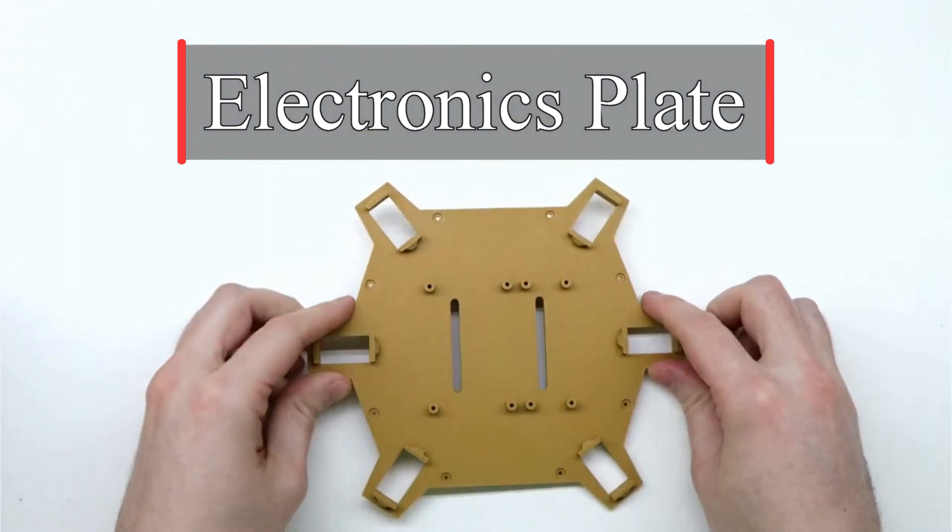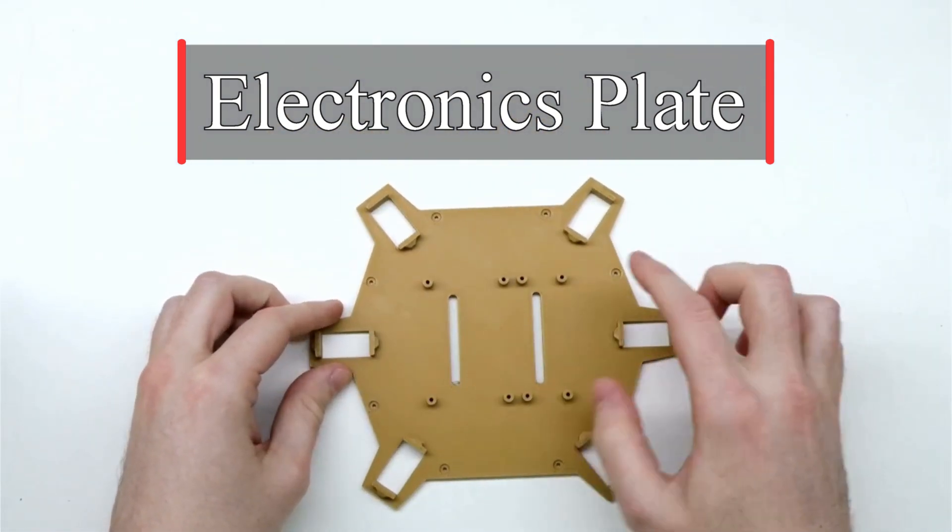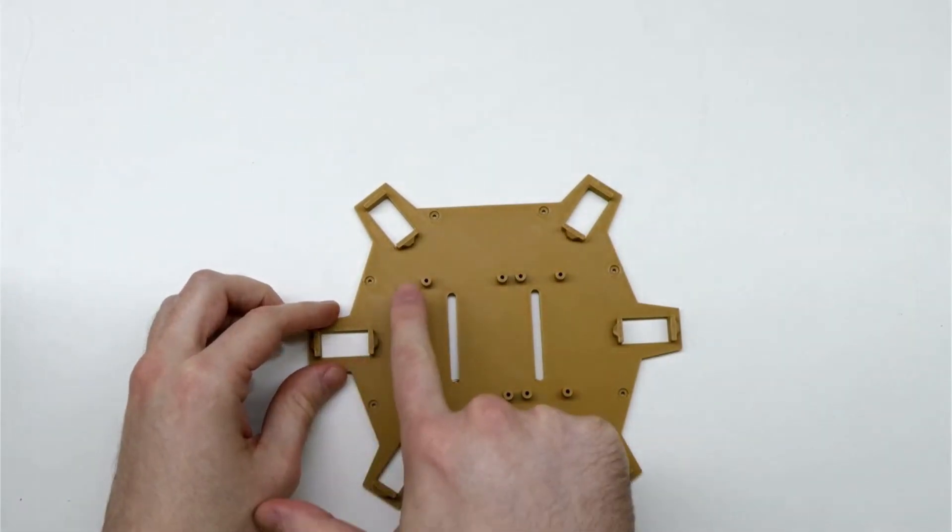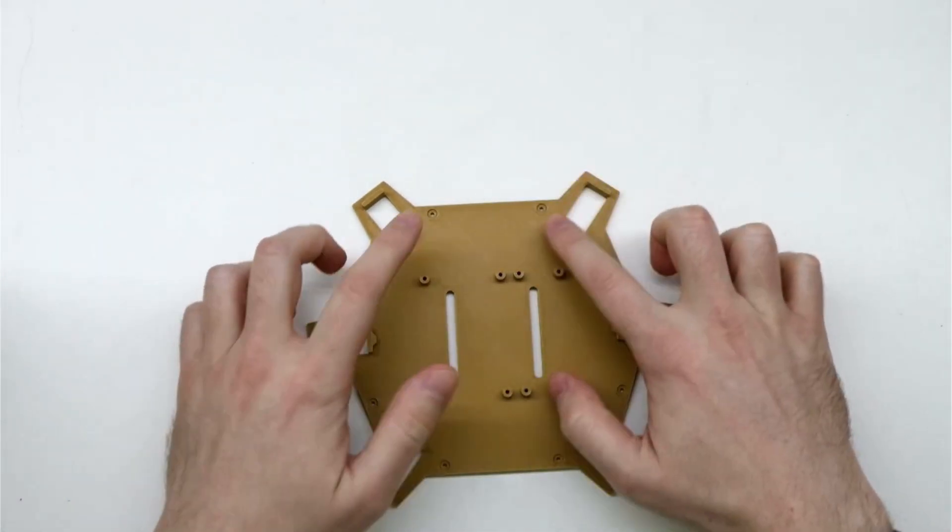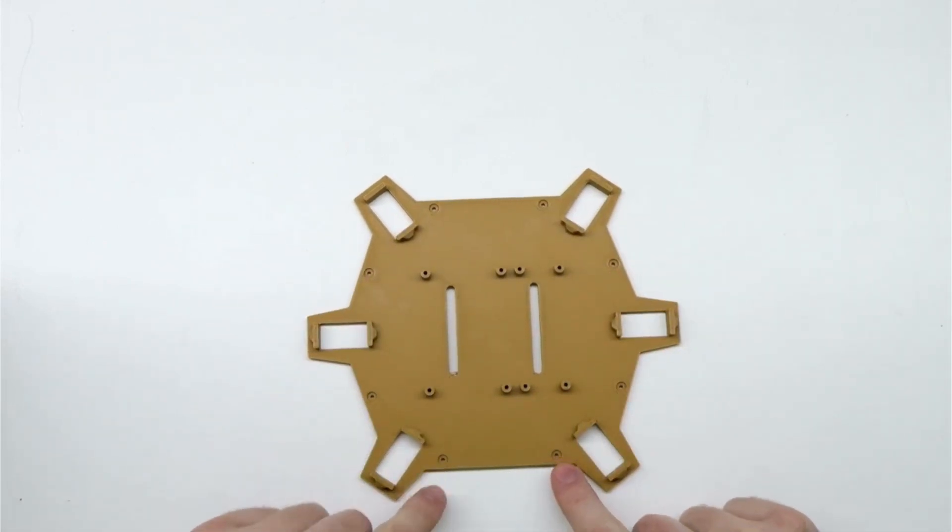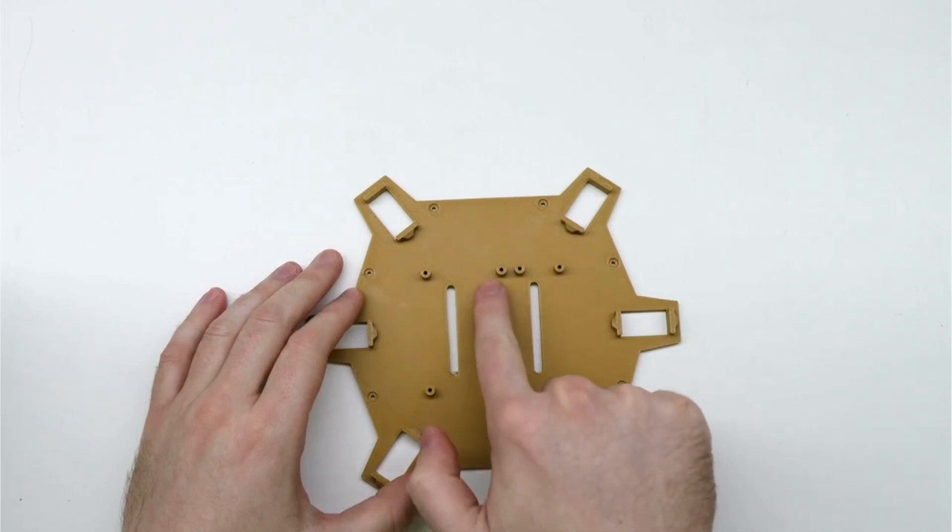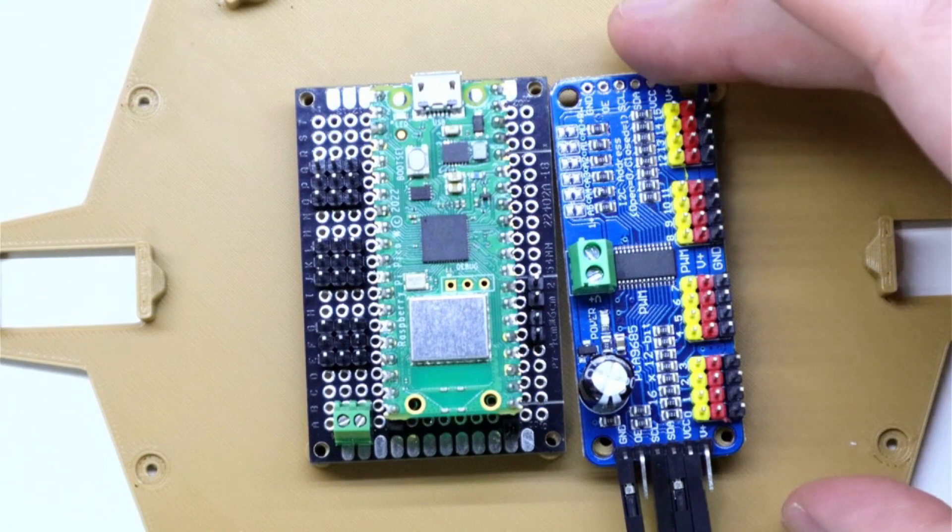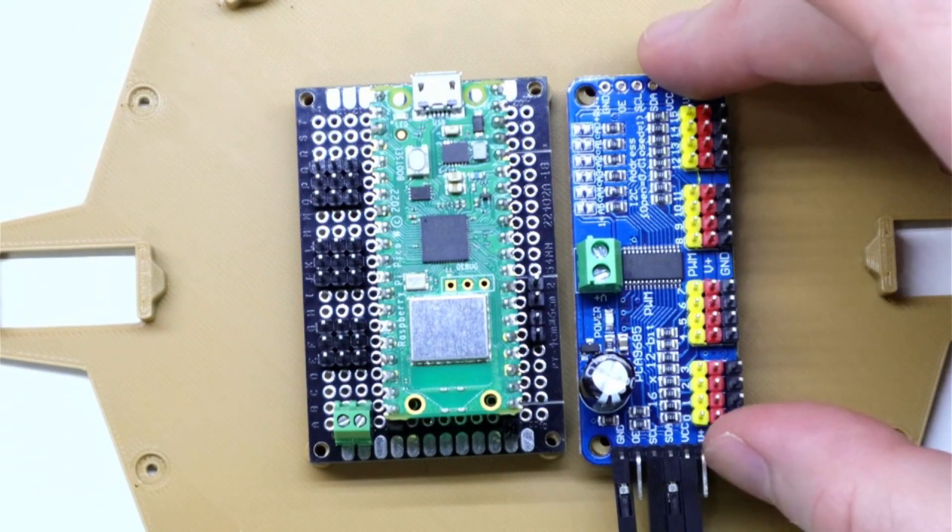This part is what I call the electronics plate. It will make up the top of the chassis. It has six mounting holes for servos around the perimeter with the servos facing down. Around the border, there are eight screw holes for mounting onto the lower part of the chassis. In the center, there are mounting posts for the electronics. I measured these mounting posts to line up with the protoboard and servo controller that I will be using for this project.